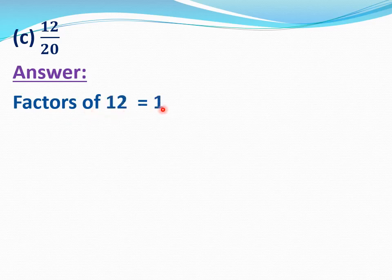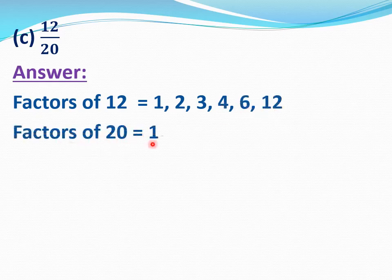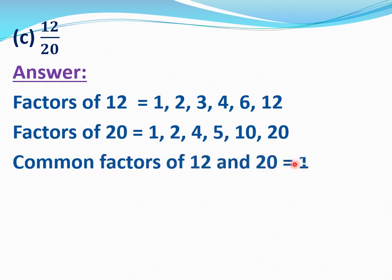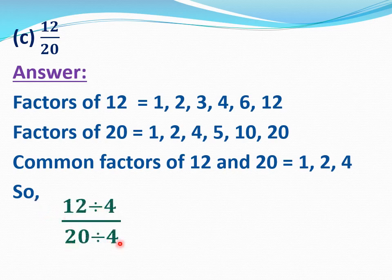Now C part, 12 by 20. We have to reduce 12 by 20 to its lowest form. Find the factors of 12 and 20. Factors of 12 equal 1, 2, 3, 4, 6, and 12. Factors of 20 equal 1, 2, 4, 5, 10, and 20. Common factors of 12 and 20 equal 1, 2, 4. The highest common factor is 4. So we will divide 12 by 20 by 4: 12 divide 4 and 20 divide 4 equal 3 by 5. 12 by 20 equal 3 by 5; 3 by 5 is the lowest form of 12 by 20.